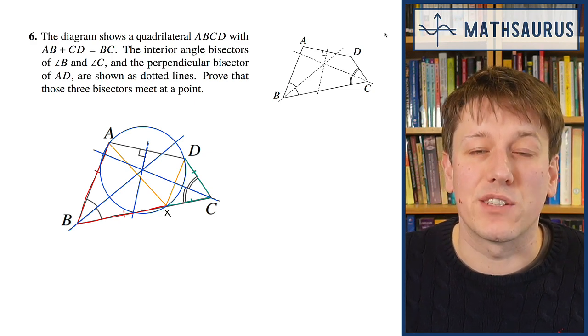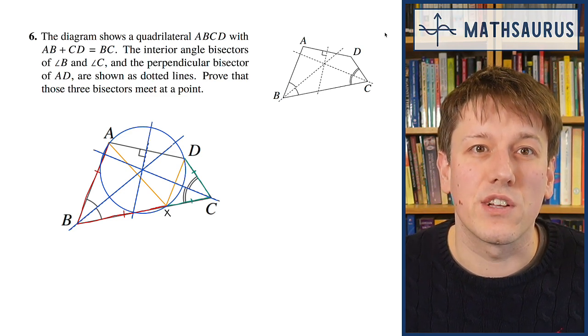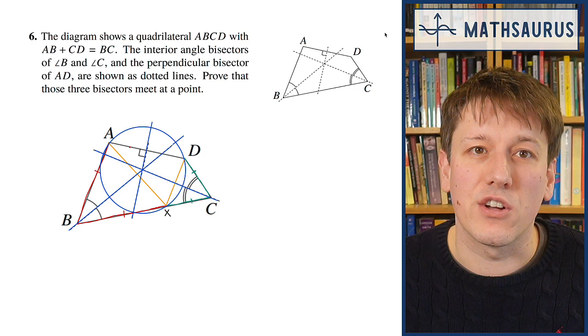We've got the perpendicular bisector through AD. That's also going to be a radius of the circle or a diameter of the circle if we extend it, and so that also goes through the center of the circle.